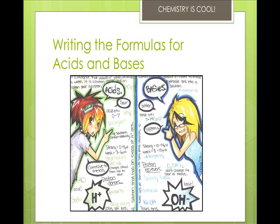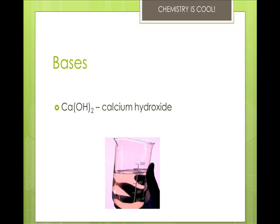Acids and bases get a little bit more difficult to name. Calcium hydroxide is an example. Bases produce the hydroxide ions, or OH1-, when dissolved in water. They must have the hydroxide name in them and connected to the metal that is part of the base. So the same name and formula rules as other ionic compounds apply for bases.